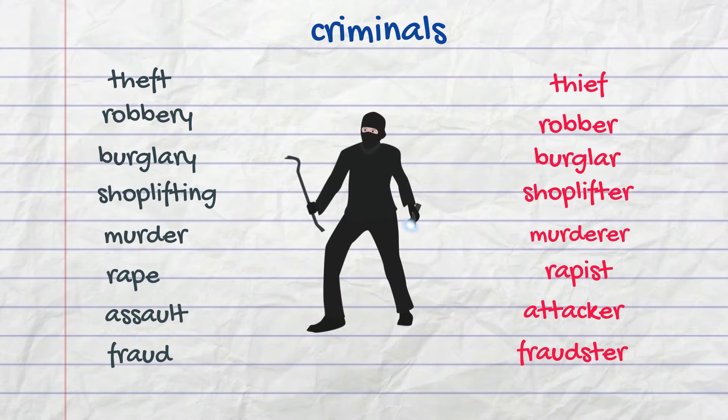Now let's look at criminals. In this slide you can see the name of a crime and a person who commits the crime. The one who steals is a thief. A person who commits a robbery is a robber. In the same manner we can name the others: a burglar, a shoplifter, a murderer, a rapist — but we don't say an assaulter. A common name for such a person is an attacker.